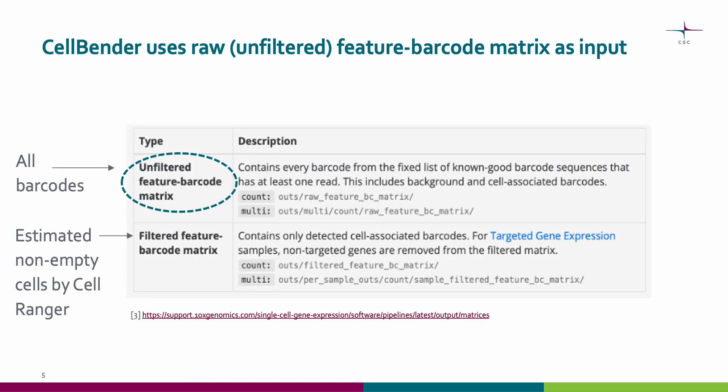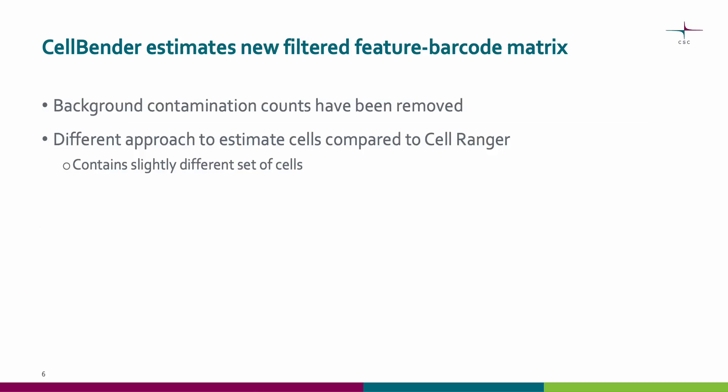We have learned to use CellRanger filtered feature barcode matrices for downstream analyses. With CellBender, we use raw feature barcode matrices as input. These raw matrices contain all barcodes that have at least one read, including empty droplets. CellBender estimates a new filtered feature barcode matrix of cells where counts from background have been removed. Because CellBender uses a different approach to estimate cells compared to CellRanger, the estimated cells in the new filtered feature barcode matrix might be slightly different.